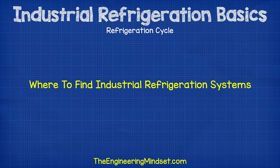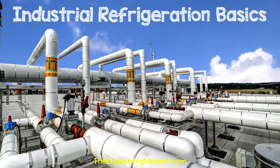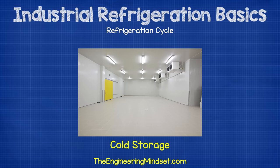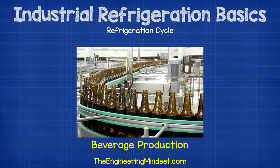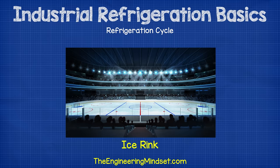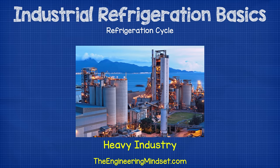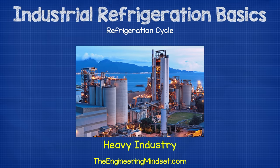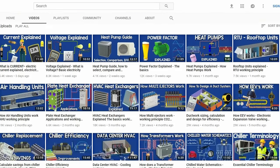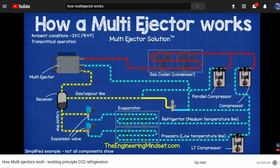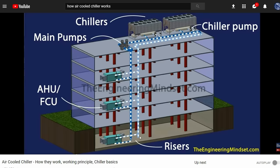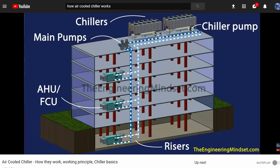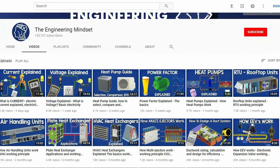So where are we going to find these types of systems? Industrial refrigeration applications are typically used in places like cold food storage, dairy processing, beverage production, ice rinks, and heavy industry. These are large scale cooling systems. We've previously covered other types of cooling systems for commercial buildings, supermarket CO2 systems, chillers, and chilled water schematics. Do check these out if you haven't already, links are in the video description below.